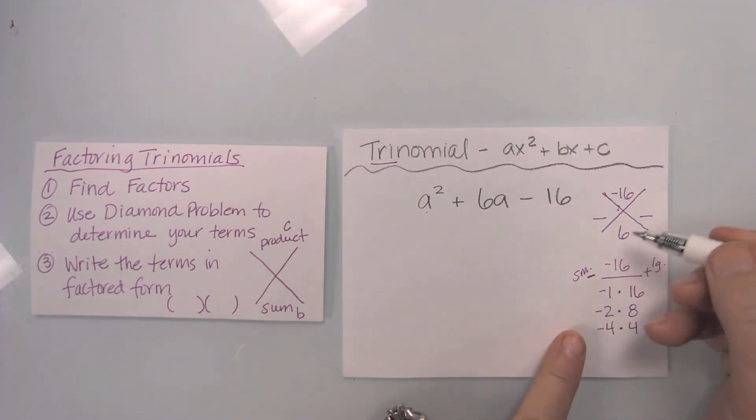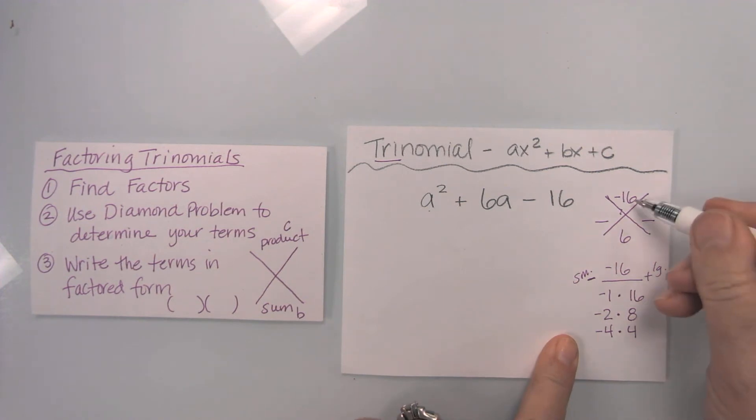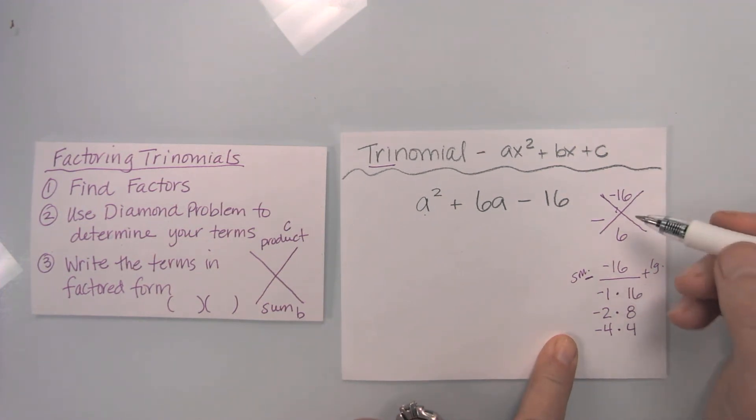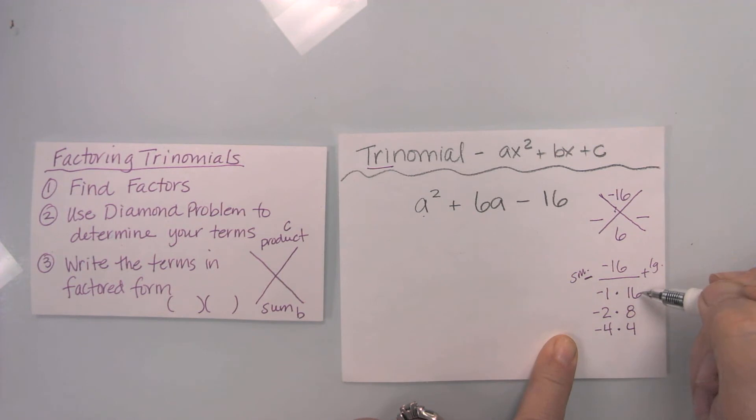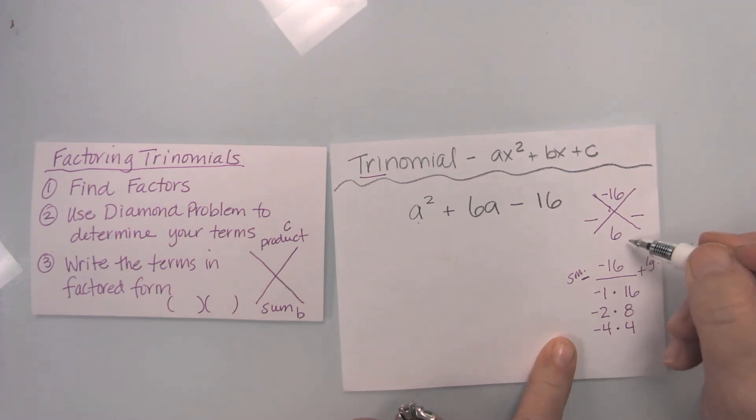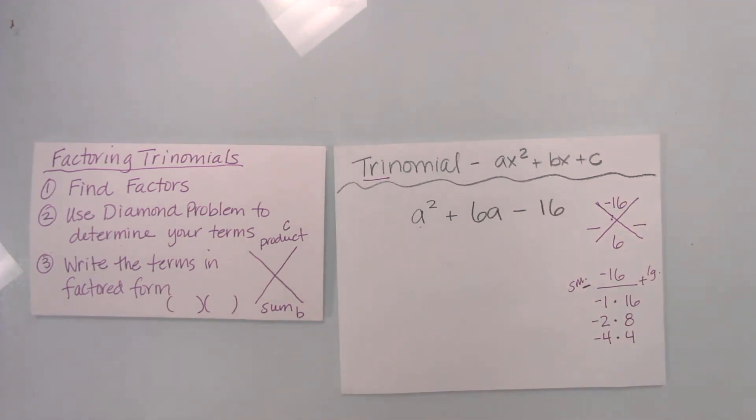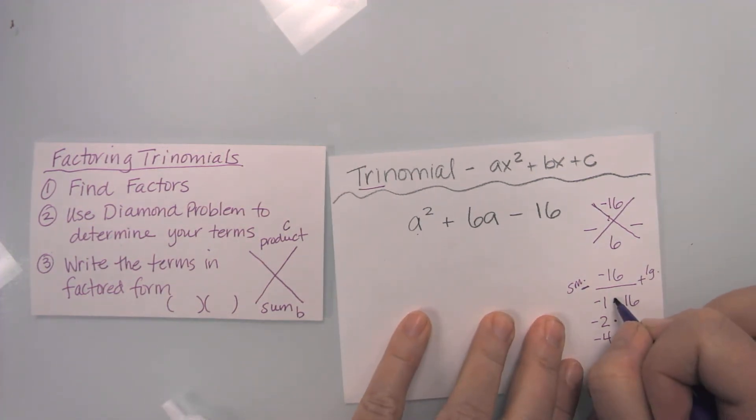Now, these are all three ways I can make a negative 16. I need to figure out which of these three sets of terms will equal six when I add them. So if it helps, come back and write in that add. So I'm going to turn this into addition.